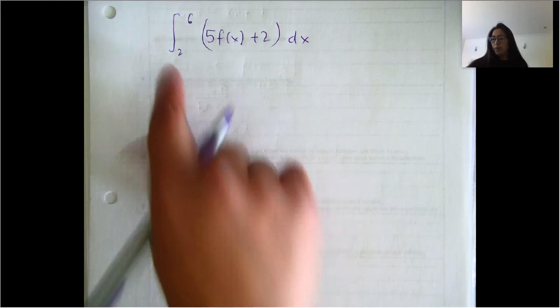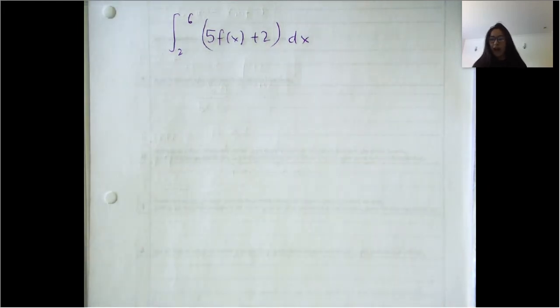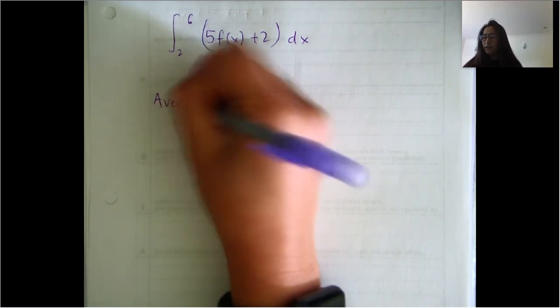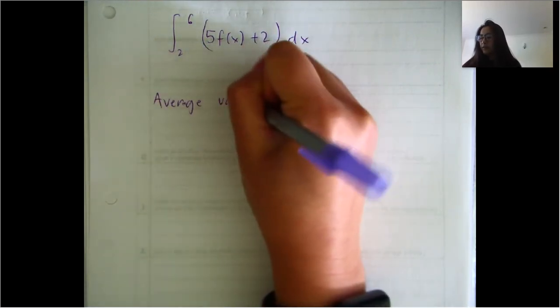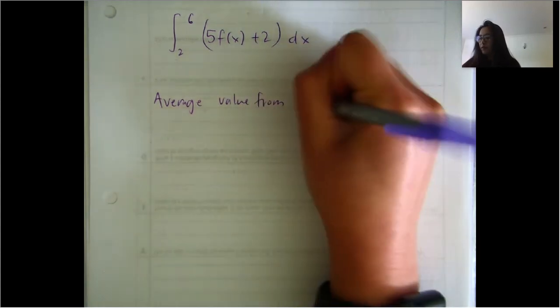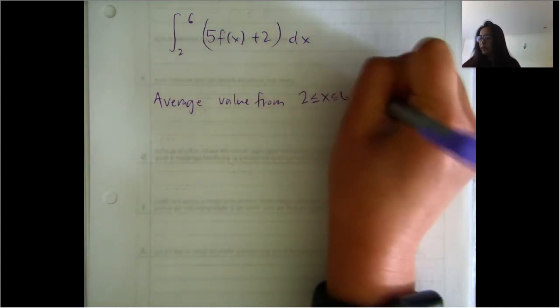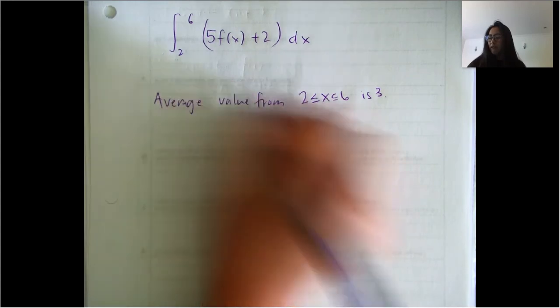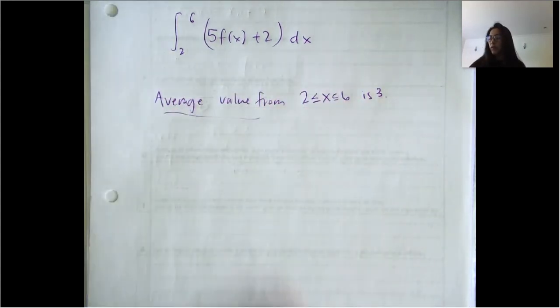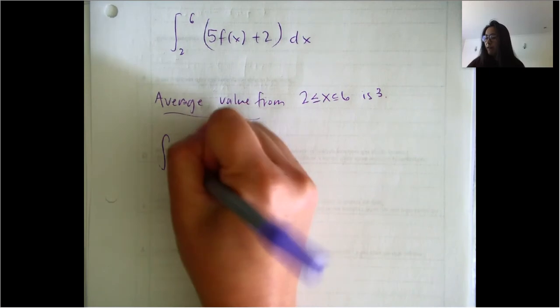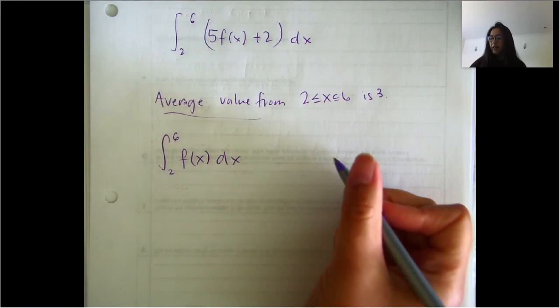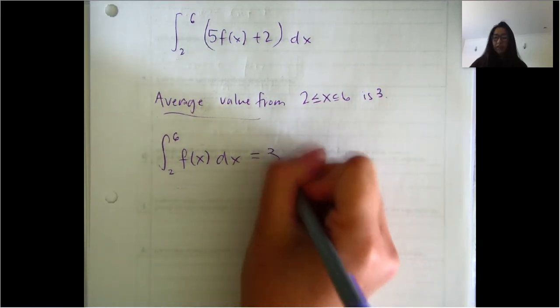So this is what we want to evaluate. And what they told us is that the average value from two to six is three. So if you were to write this as an expression, what you would say is average value means integral over interval. So the integral of F of X DX from two to six equals three.